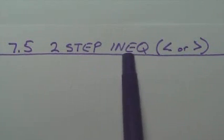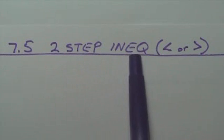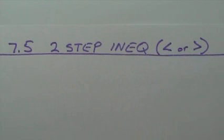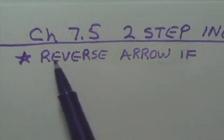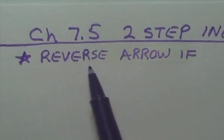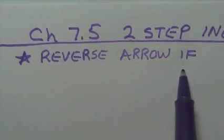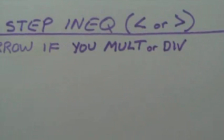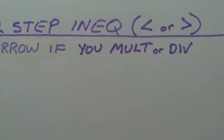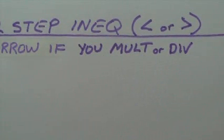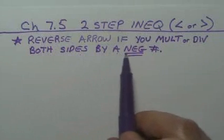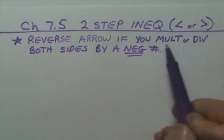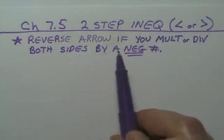Today we're talking about two-step inequalities — that's the less than or greater than. Something to keep in mind is that we reverse the arrow if you multiply or divide both sides by a negative number.